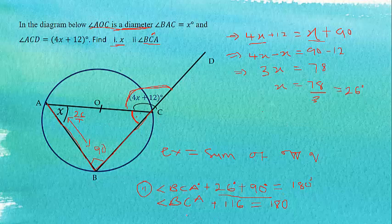Now we can make this one the subject. So angle BCA equals 180 minus 116. So 180 minus 116 gives us 64.